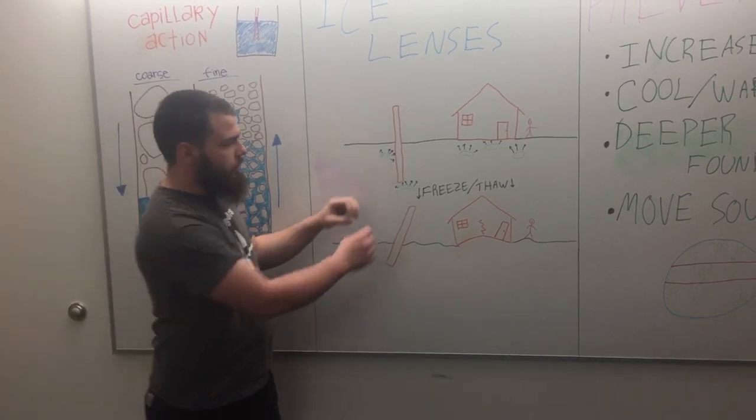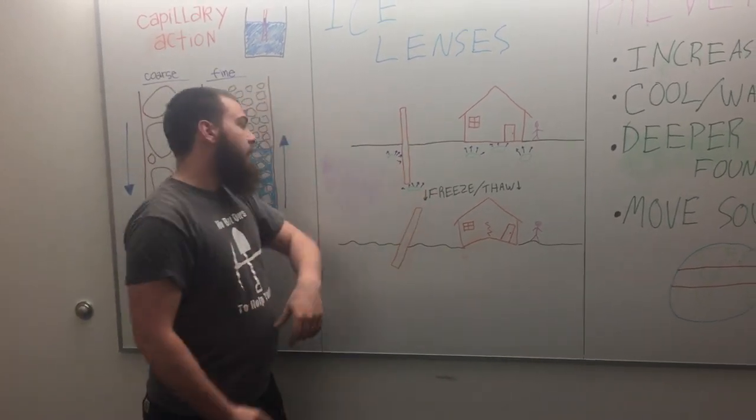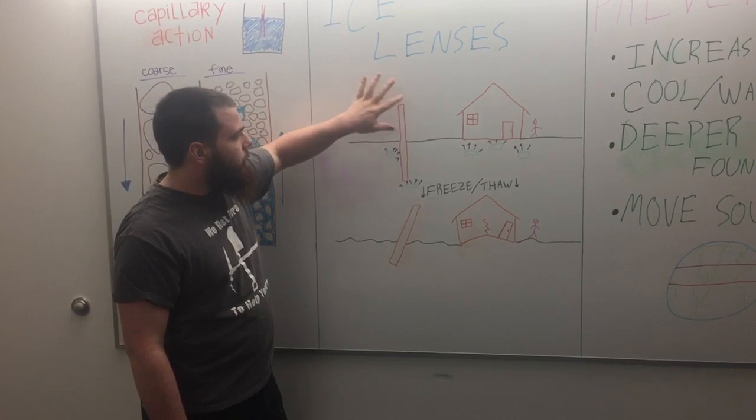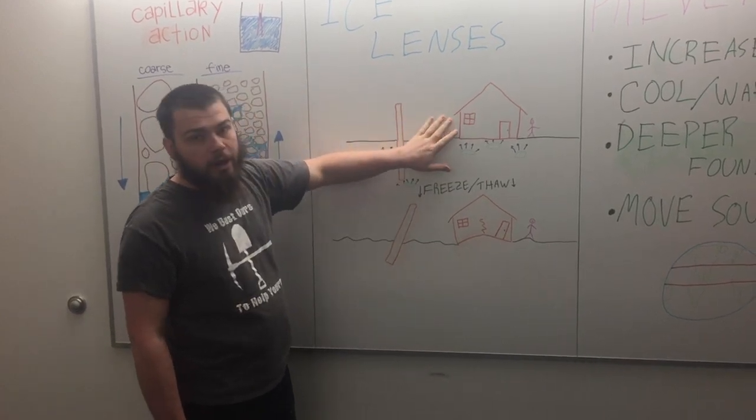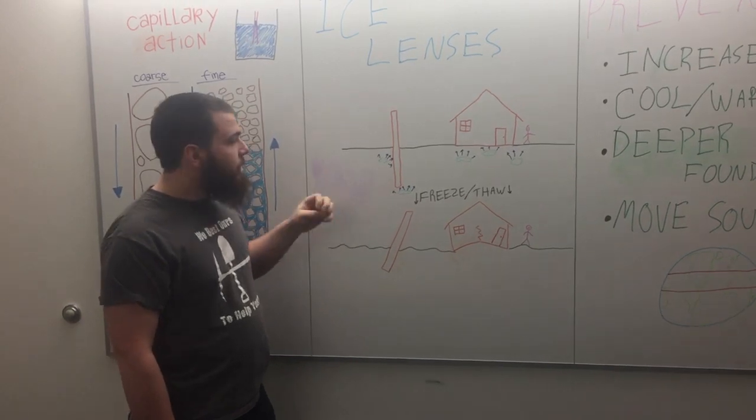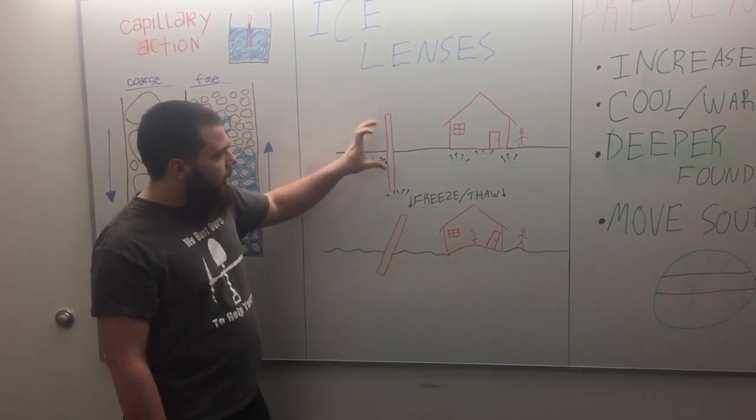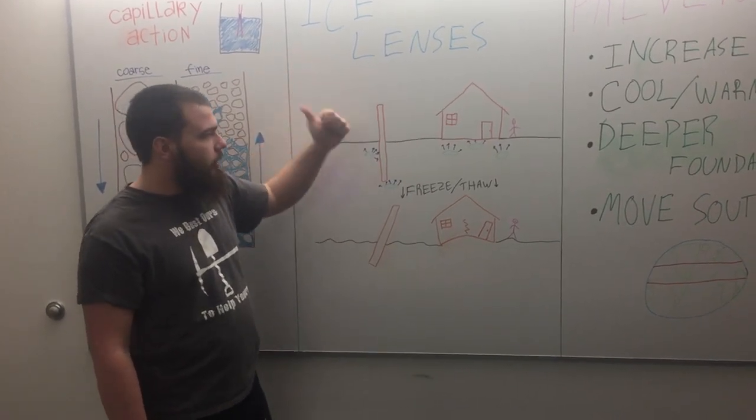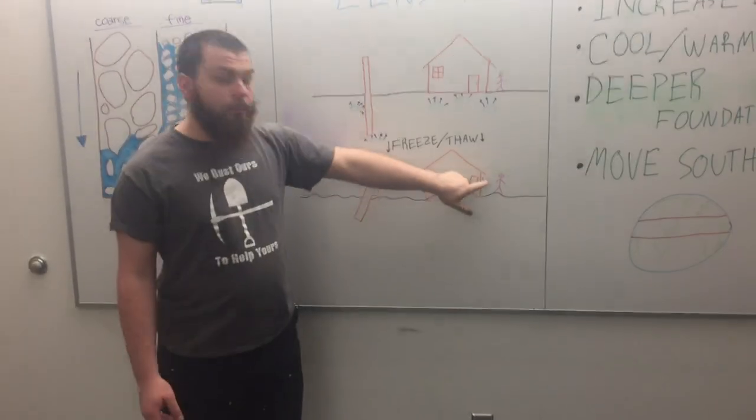Ice lenses in the soil exert pressure on the surroundings. If you have your pile with your flagpole or whatever and you've got your house, and these ice lenses are freezing and thawing over the years, they will eventually shift your pile, jack it straight out of the ground, and break your house. This is bad.